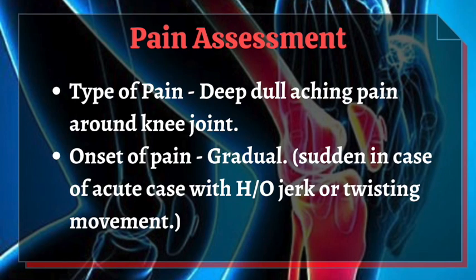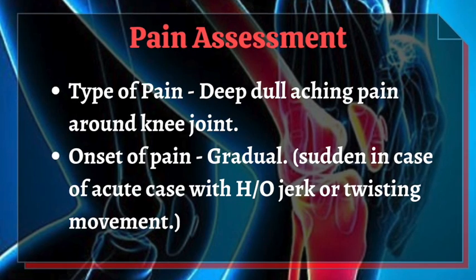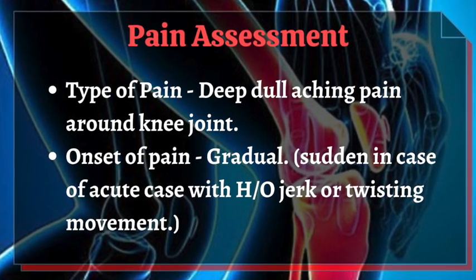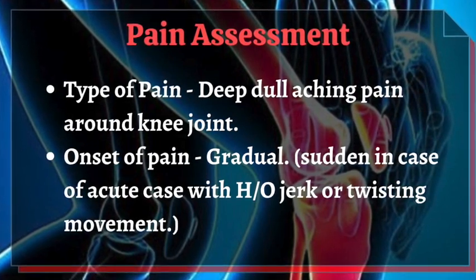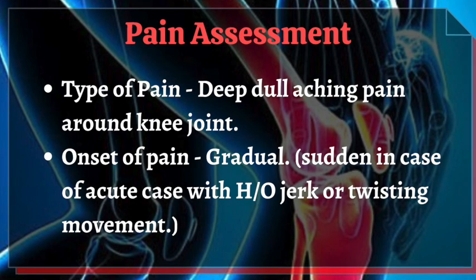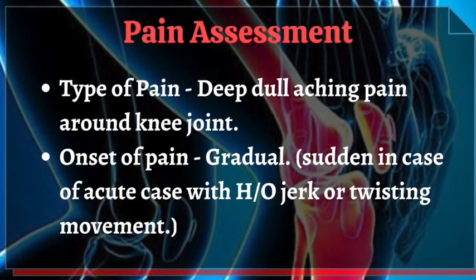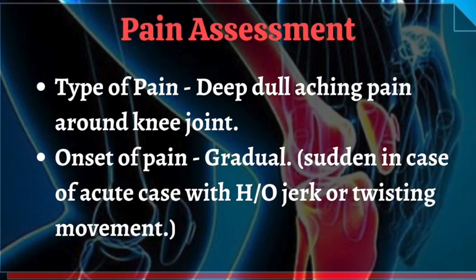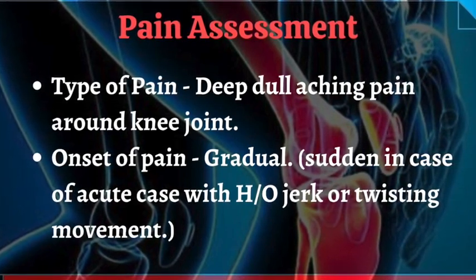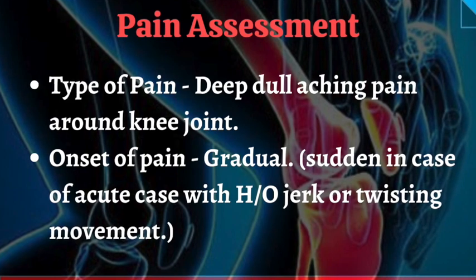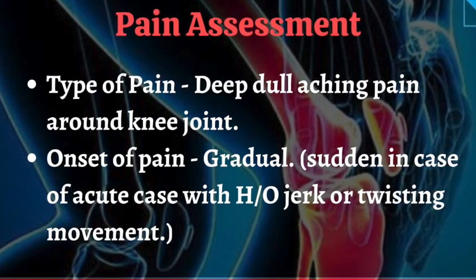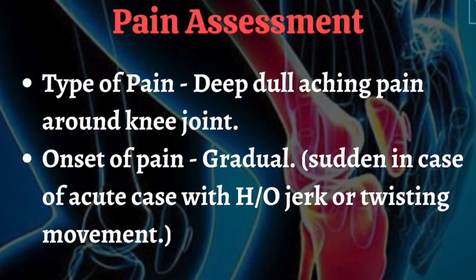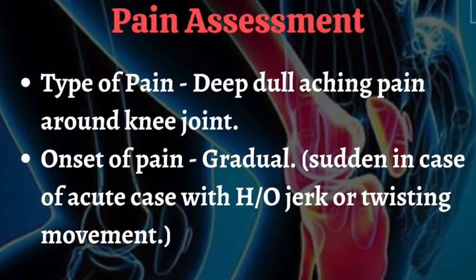Now we'll move towards the objective assessment part, which first involves pain assessment. A patient with osteoarthritis may experience deep, dull, aching pain around the affected knee joint. The onset of pain is generally gradual, but it can be sudden in the case of an acute episode with a history of sharp or twisting movement.